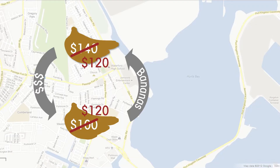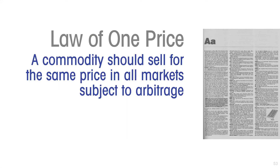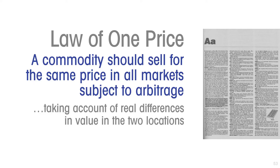This leads us to the law of one price: a commodity should sell for the same price in all markets subject to arbitrage. This takes account of any real differences in value between the two locations. You're not going to get a hand of bananas selling for actually the same price in a crowded hot downtown market and in an air-conditioned wide-aisled supermarket in a wealthy neighborhood with ample parking, because included in the price in the fancy supermarket is the cost of the air-conditioning, sales staff, and the parking lot. But if you were to unbundle those extras, then the bananas themselves would be selling for a similar price.